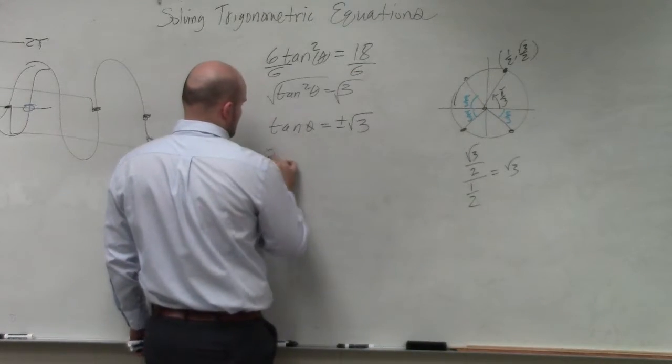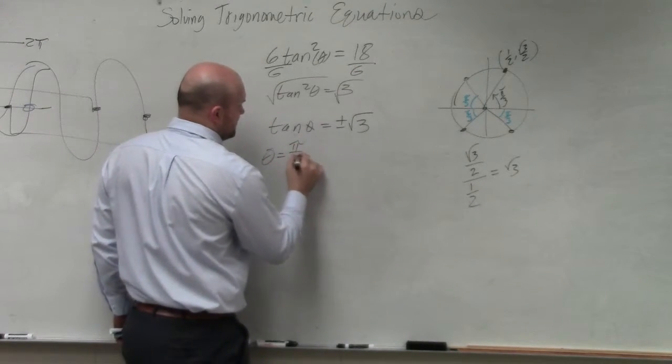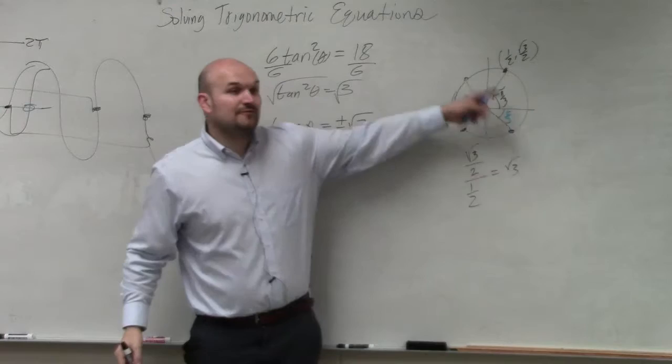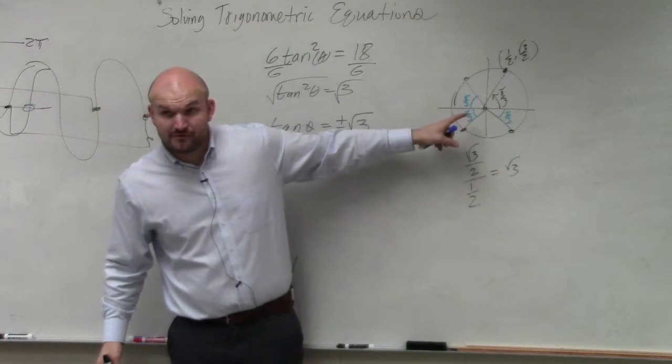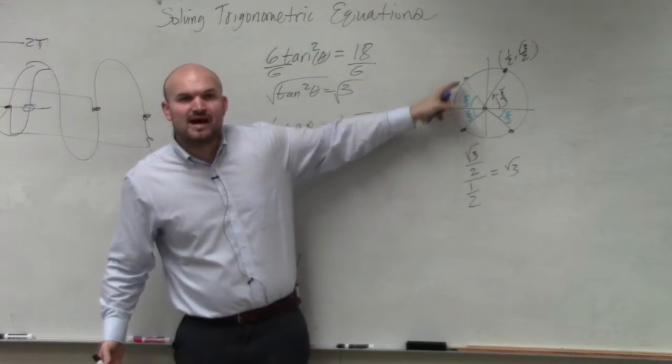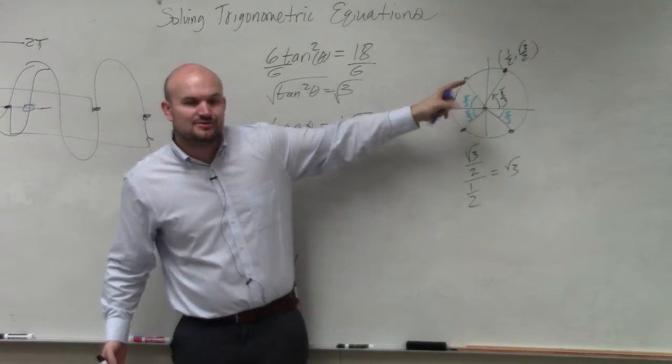So the first one, obviously, is pi over 3. Halfway around the circle is 3 pi over 3, or pi, right? So if I'm 1 short, if I'm pi over 3 short, that means I'm at 2 pi over 3.